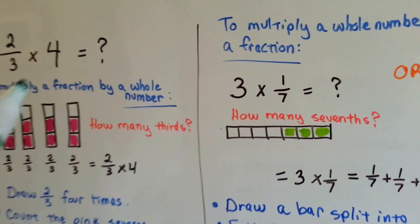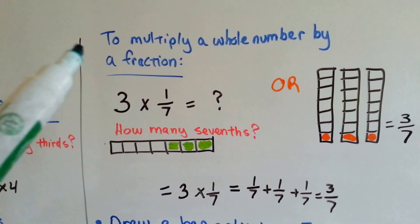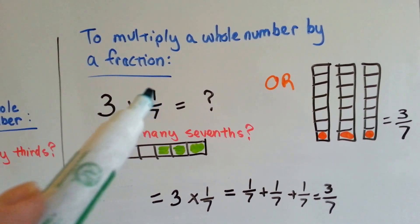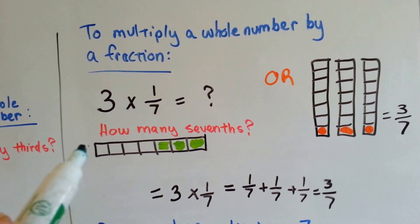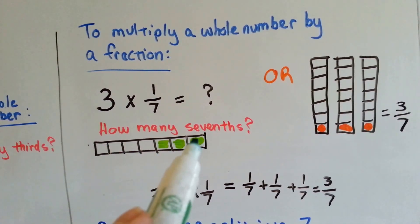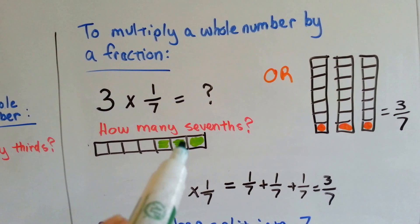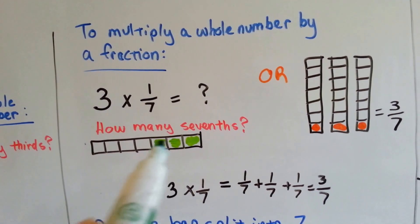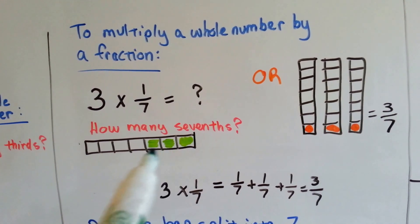Now, to go the other way, we did a fraction by a whole number. To multiply a whole number by a fraction, three times one-seventh, we can make one bar that has seven boxes in it. And we can fill in one-seventh, another seventh, and another seventh. So we did it three times. Then we can see the answer is three-sevenths.